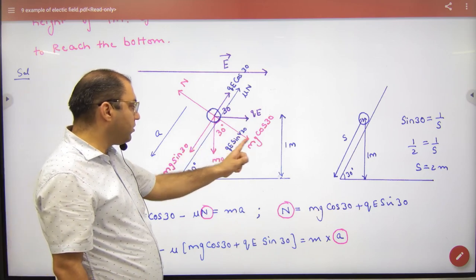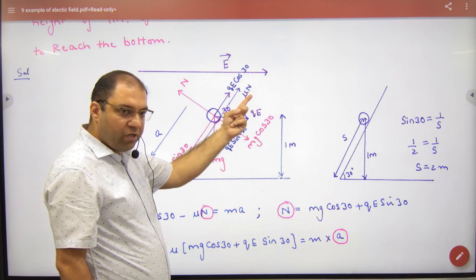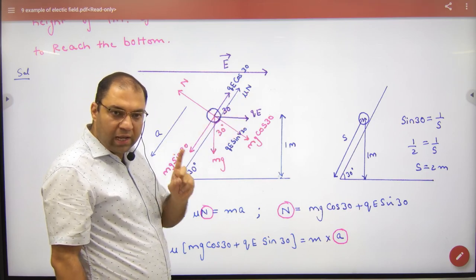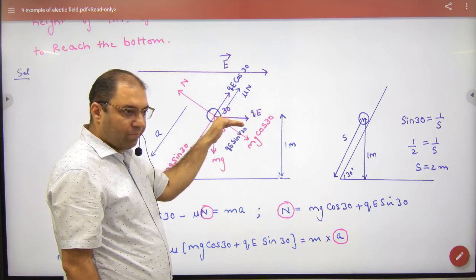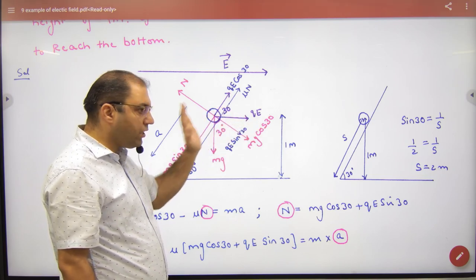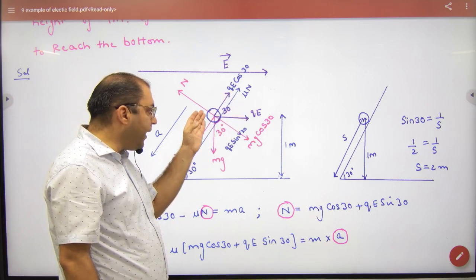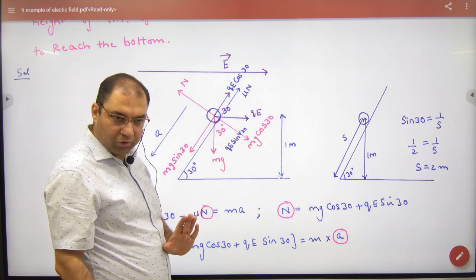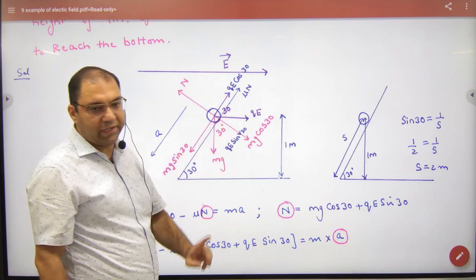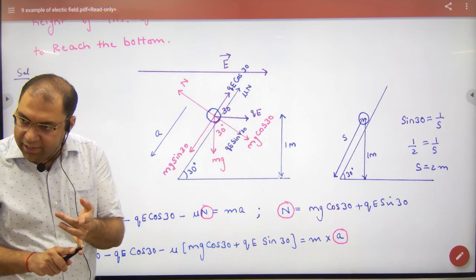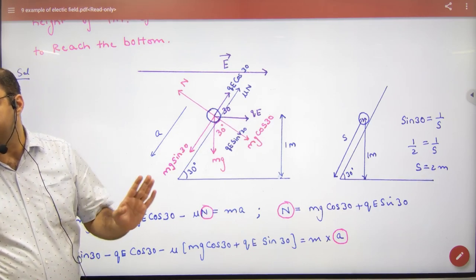So first force, weight's components. Second one, force of friction, normal reaction. Last force, electric field is right. So QE is also right. This is 30, so this is also 30, corresponding angle. QE has one component QE cos 30 and one component QE sin 30. So QE's components are taken. One component with cos, one with sin. So now I have taken weight's components, I have taken friction, I have taken normal reaction, I have taken QE's components.